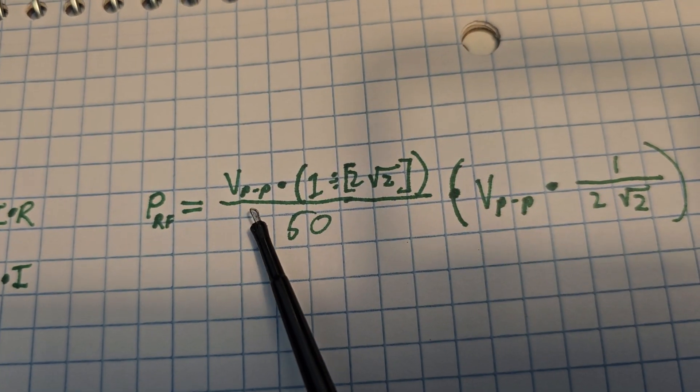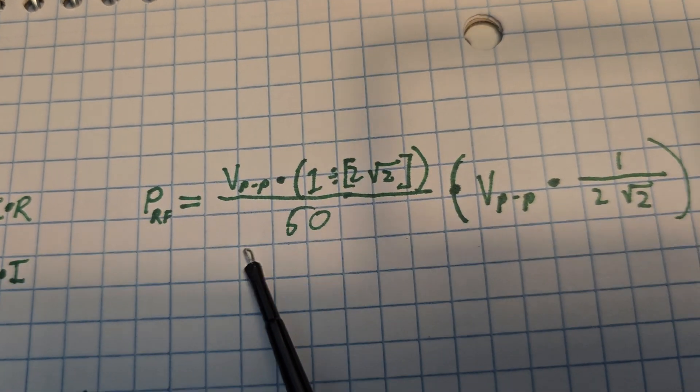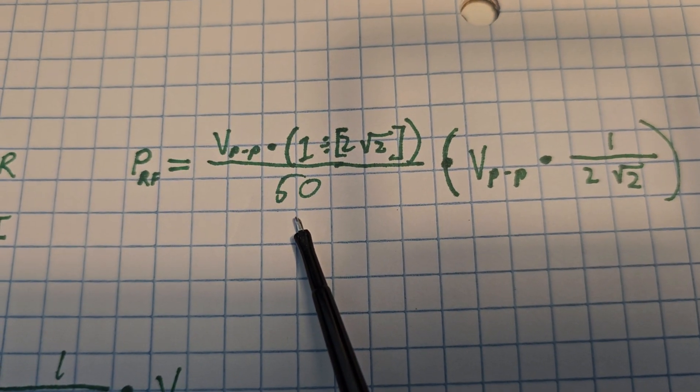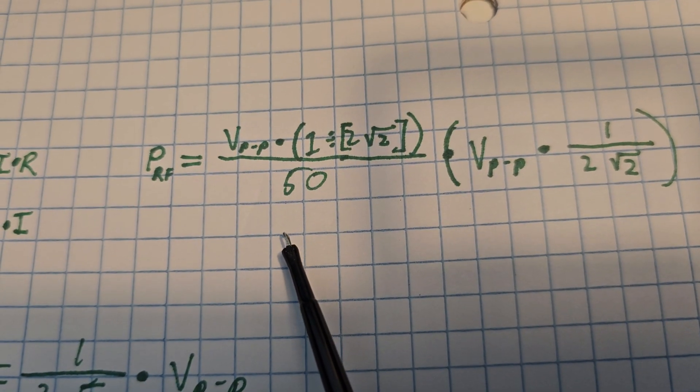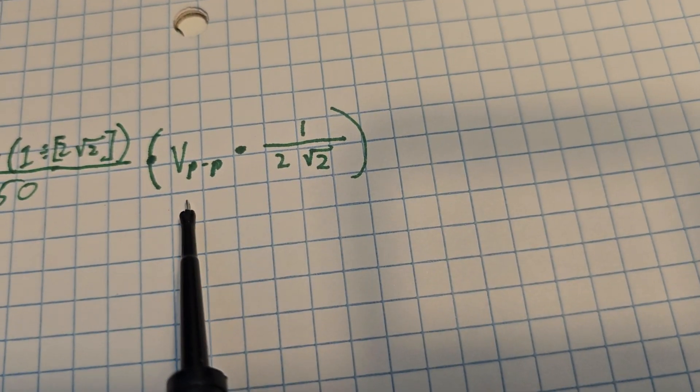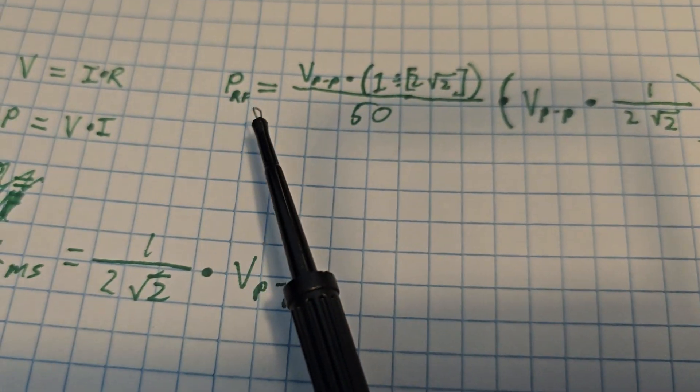Now here, this part of the equation is used to find the current flowing through the resistor, and this is just multiplying the voltage to get power.